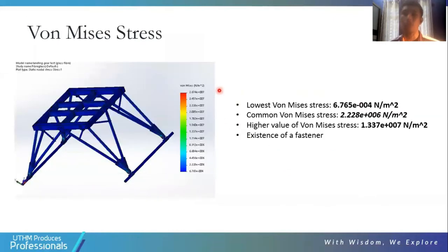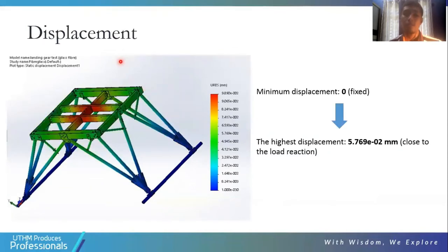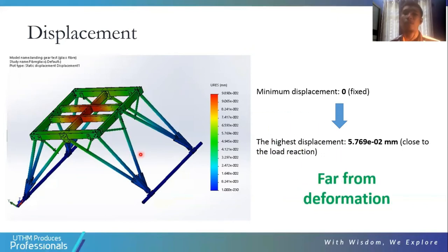The simulation shows that the stresses imposed on the structure are below yield criteria, indicating acceptable strength with no critical parts indicated in red. For displacement, the indication is between blue and green for the landing gear part. Since the load is applied at the top, the landing gear area shows it is far from deformation when the S-glass fiber is implemented into the landing gear structure.